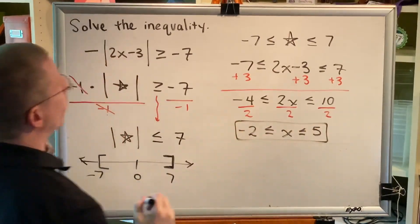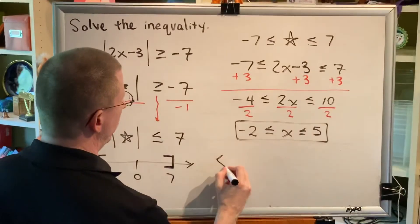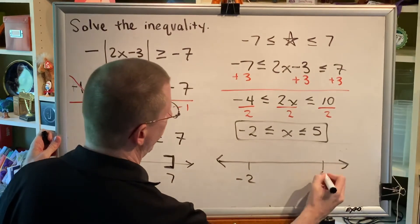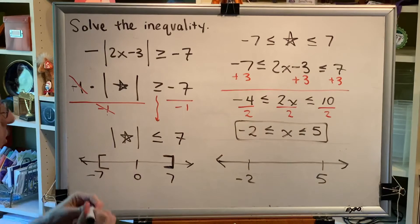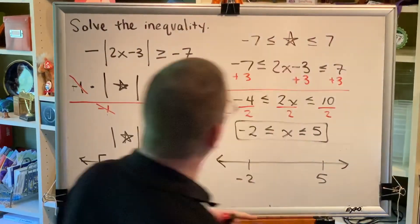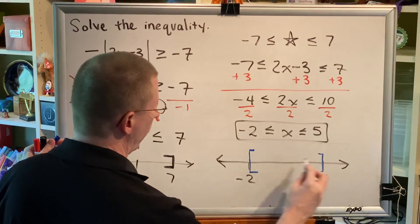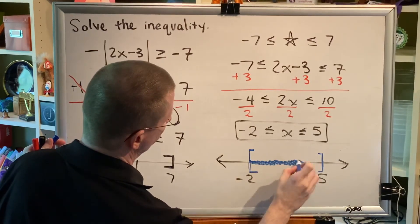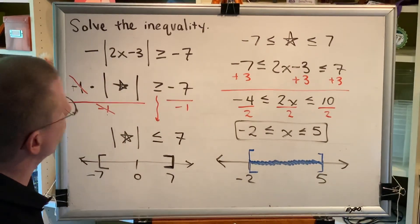Now, some problems of this type will require you to create a number line for your final answer. This doesn't happen to be one of them, but it doesn't take too long to do, so I'll just do it very quickly. Remember, this is a between-type inequality, so that means that we would be shading in between the numbers negative 2 and 5. So our final answer would look like this. This is the inequality, and this is the number line graph.